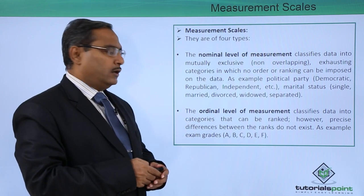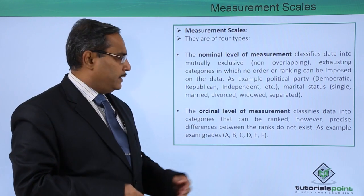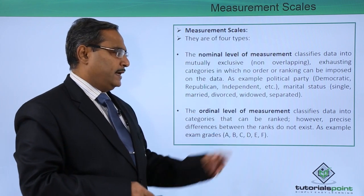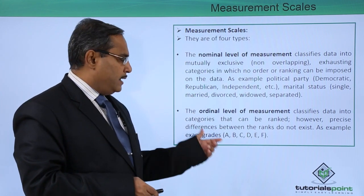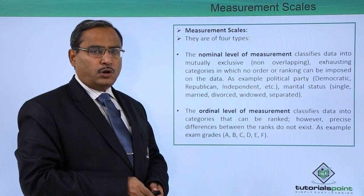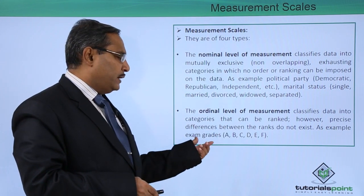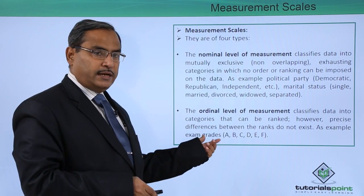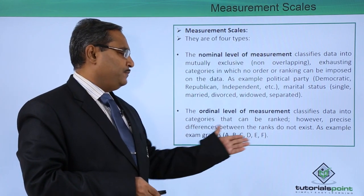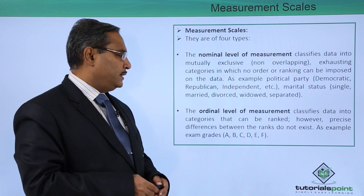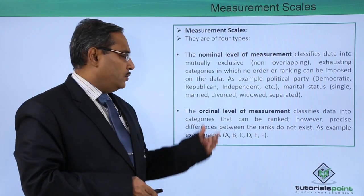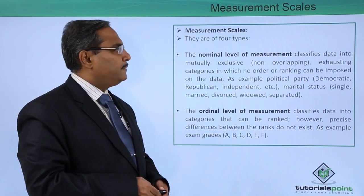The next one is the ordinal level of measurement. It classifies data into categories that can be ranked. However, precise differences between the ranks do not exist. As an example, we can consider grades — values like A, B, C, D, E, F. We are having 6 different grades, and this is a good example of ordinal level of measurement.